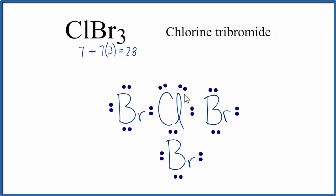So this is our final Lewis structure with the expanded octet for the chlorine atom in the center. This is Dr. B, thanks for watching.